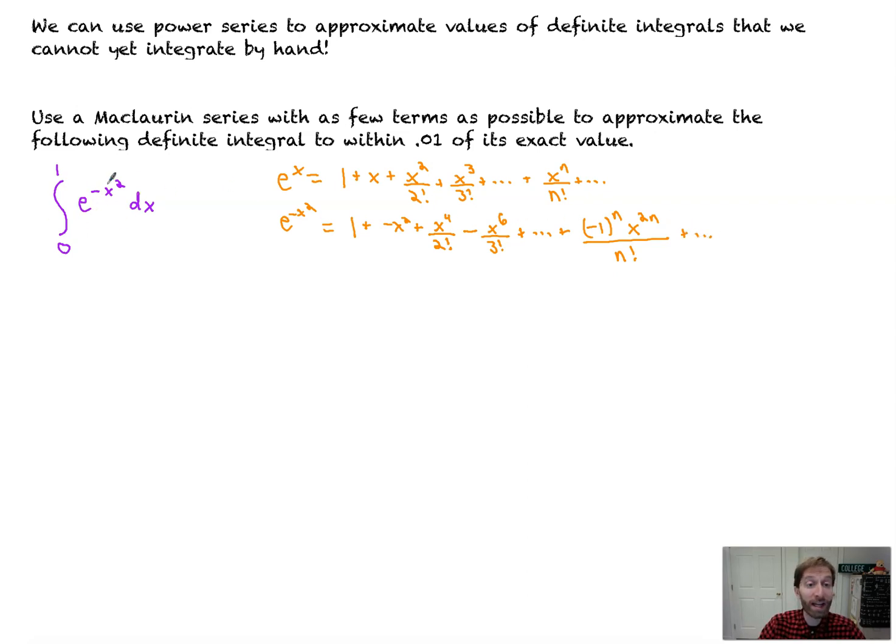So now what we're going to do is integrate that and evaluate it like normal. So then the integral from 0 to 1 of e to the minus x squared dx is approximately, well, let's find this. It's going to be the integral of this, which is x minus, integrate this like normal, x cubed over 3 factorial. Sorry, not over 3 factorial, just over 3. We're integrating it like normal, of course.